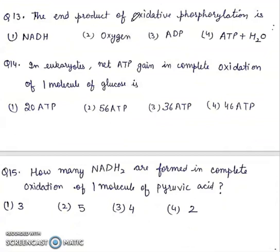Question 13: The end product of oxidative phosphorylation is NADH, oxygen, ADP, or ATP plus H2O? Right answer will be fourth, ATP plus water.